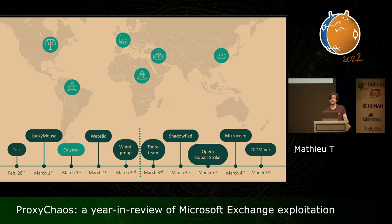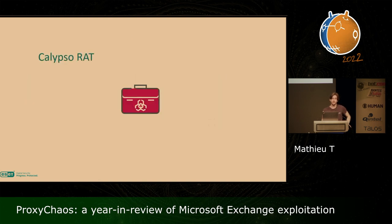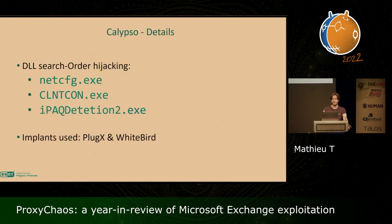In the following days, Calypso operators also targeted servers of governmental entities and private companies in Africa, Asia, and Europe. Calypso was first documented by Positive Technologies in 2019. It's a cyber espionage group believed to be active since 2017, and they are mostly targeting government organizations. Their toolset includes the Calypso RAT, which gave them their name; they also use PlugX and the Whitebird backdoor. On the compromised email server, they tried to load some DLLs using DLL search order hijacking, and the implants they used are PlugX and Whitebird.